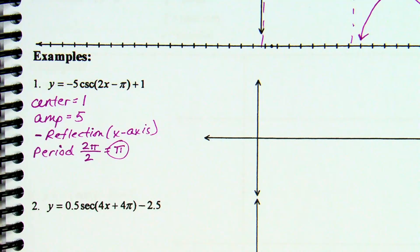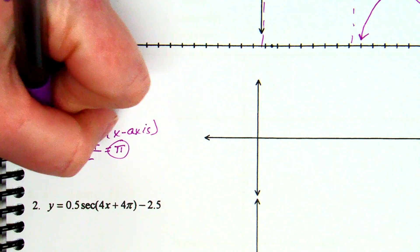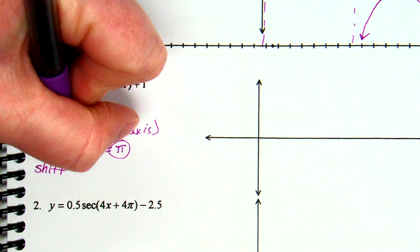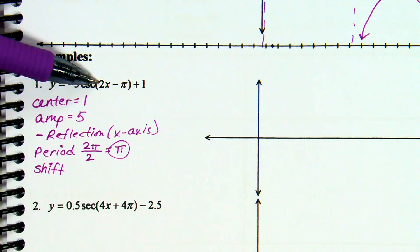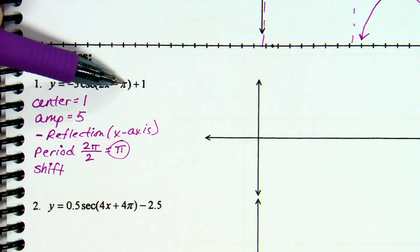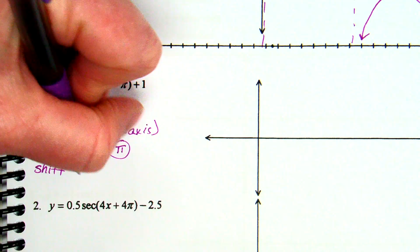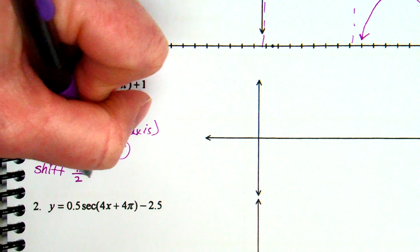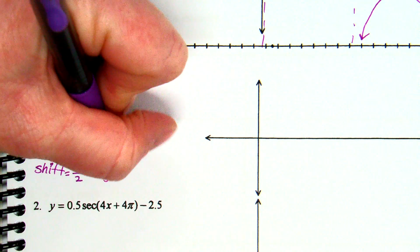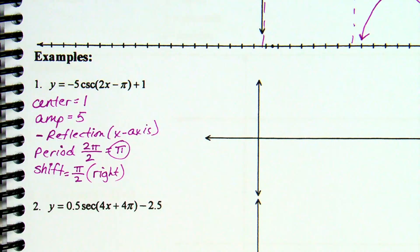Phase shift — how do we do phase shift? Which direction — pi over 2? It's going to be a right, because this is a minus. So we need to think in terms of a positive pi over 2. Positive pi over 2 says right. If it's positive, that's right. If it's negative, that's left.